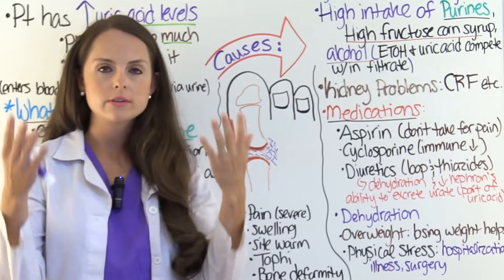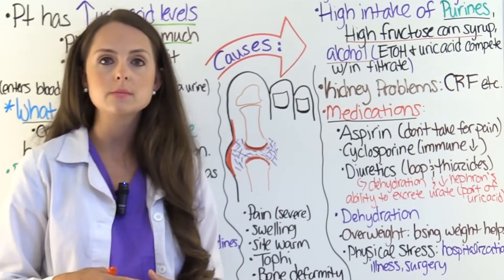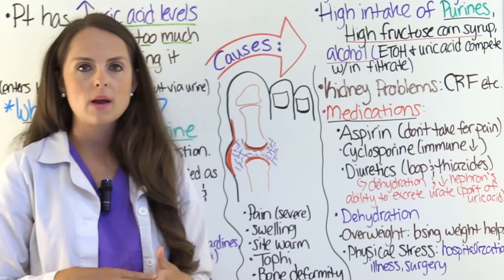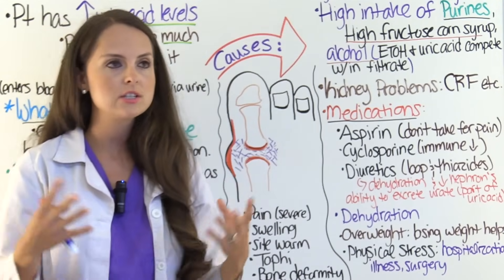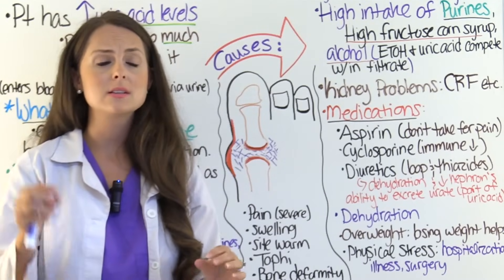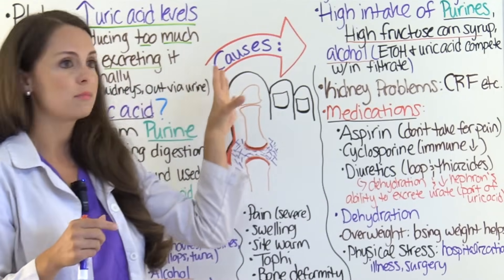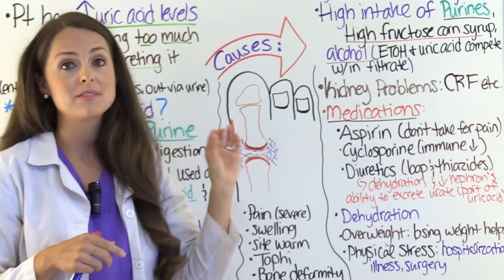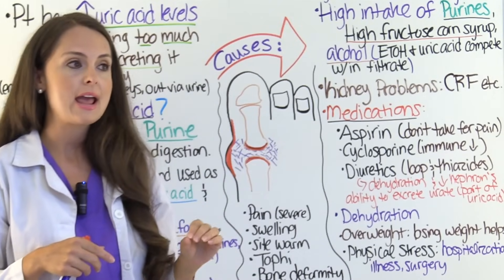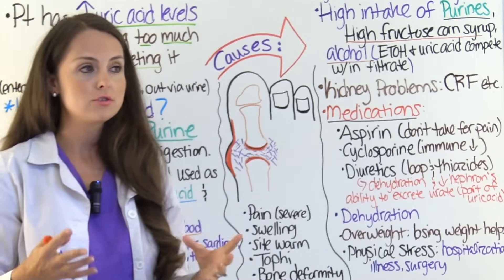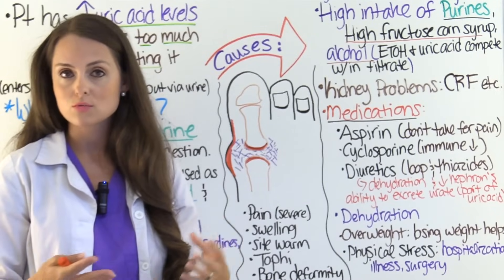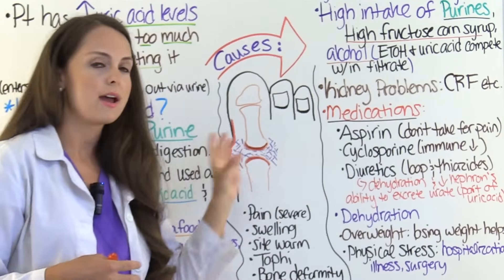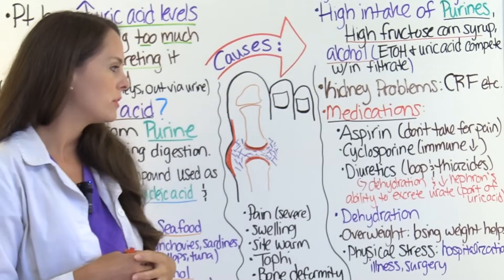So whenever you're doing that head-to-toe assessment, you really need to be looking at those joints and seeing if they're warm and red. The patient is going to tell you they're having severe pain. If you see a joint that's red, inflamed, and swollen, you want to report that to the doctor, because gout could be presenting and they can give medications to help with that.